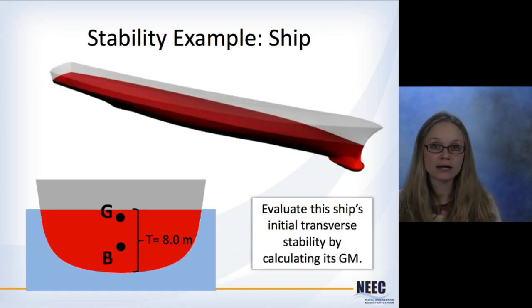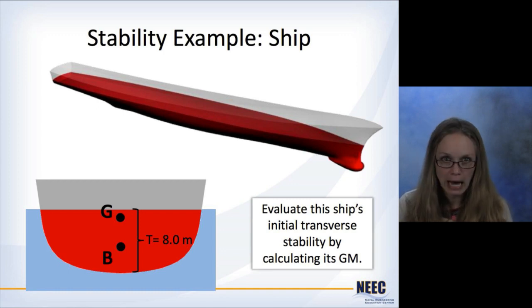Quick example here for an actual ship. An actual ship is not a block, you can't really easily calculate its inertia of the water plane area. But same sort of thing, we're going to take the ship, evaluate its initial transverse stability by calculating its GM.